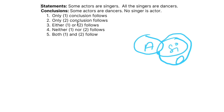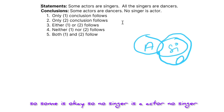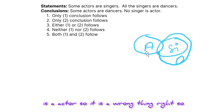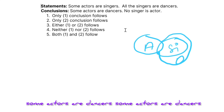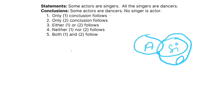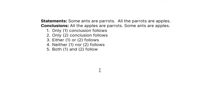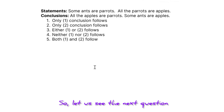From those statements, the conclusions to verify are: some actors are dancers — some is okay, so this is correct. No singer is an actor — that is a wrong conclusion. So some actors are dancers is valid, but no singer is an actor is not. Therefore, only one follows. That's the simple procedure for syllogism.